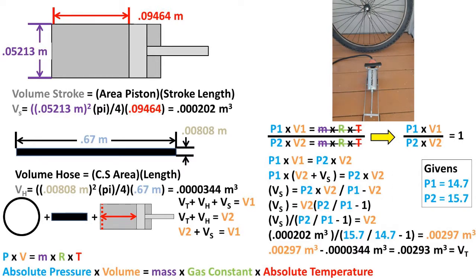Now, to get the volume of the tire, we must subtract out what the volume of the hose is from volume 2. Doing so, we are left with the volume of the tire of 0.00293 meters cubed.